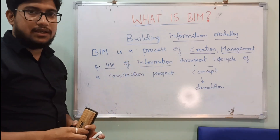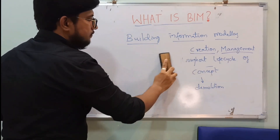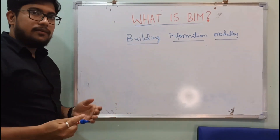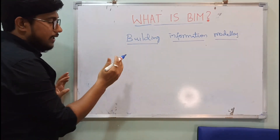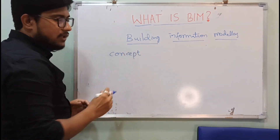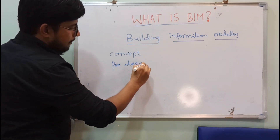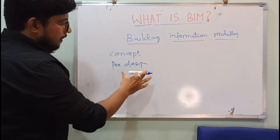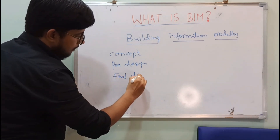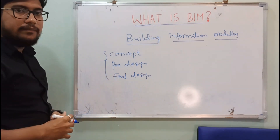Let's understand what the life cycle of a project looks like and what information we are creating. Any project starts from concept. After concept is finalized, the next step is pre-design or primary design. When the primary design is finished, we move to final design. So these are the design stages.